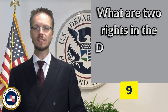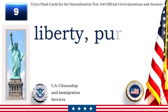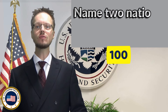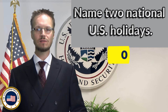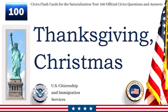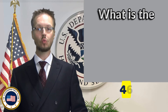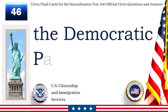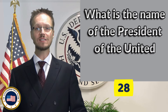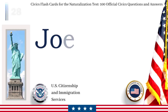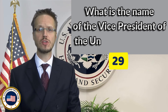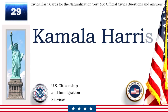What are two rights in the Declaration of Independence? Liberty. Pursuit of happiness. Name two national U.S. holidays. Thanksgiving, Christmas. What is the political party of the president now? The Democratic Party. What is the name of the president of the United States now? Joe Biden. What is the name of the vice president of the United States now? Kamala Harris.